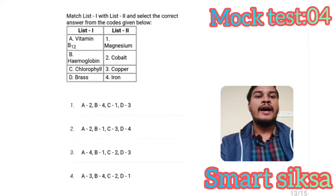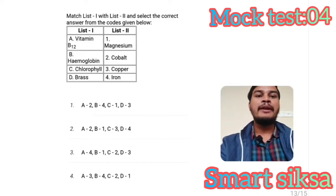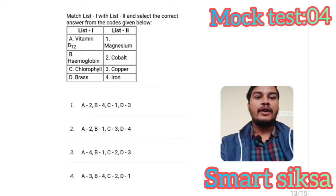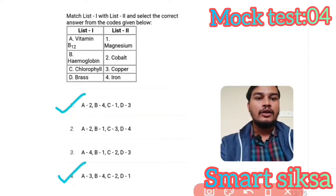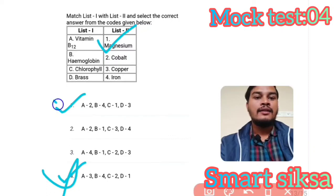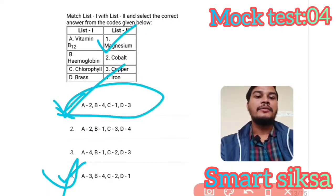Next question: Match list one with list two and select the correct answer. Vitamin B12 is matched with hemoglobin and iron. Chlorophyll is matched with magnesium. Option one is the right answer.